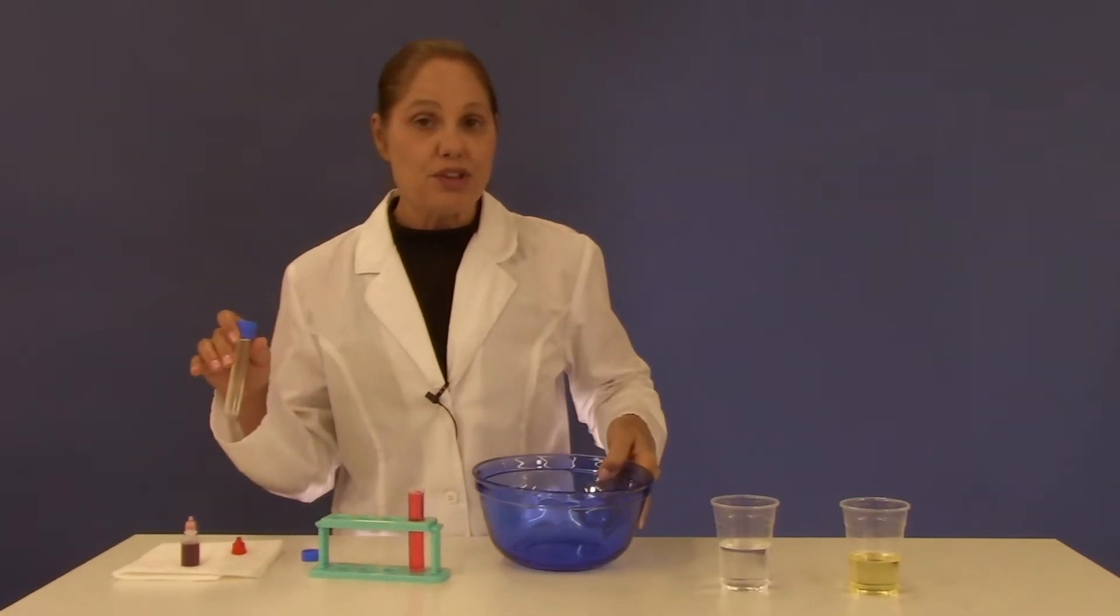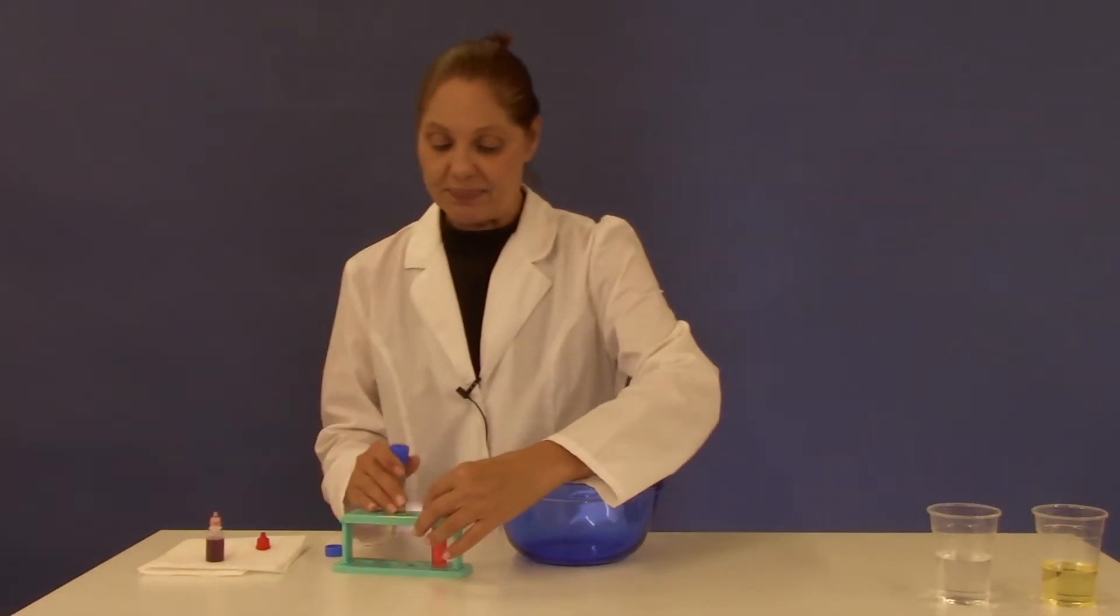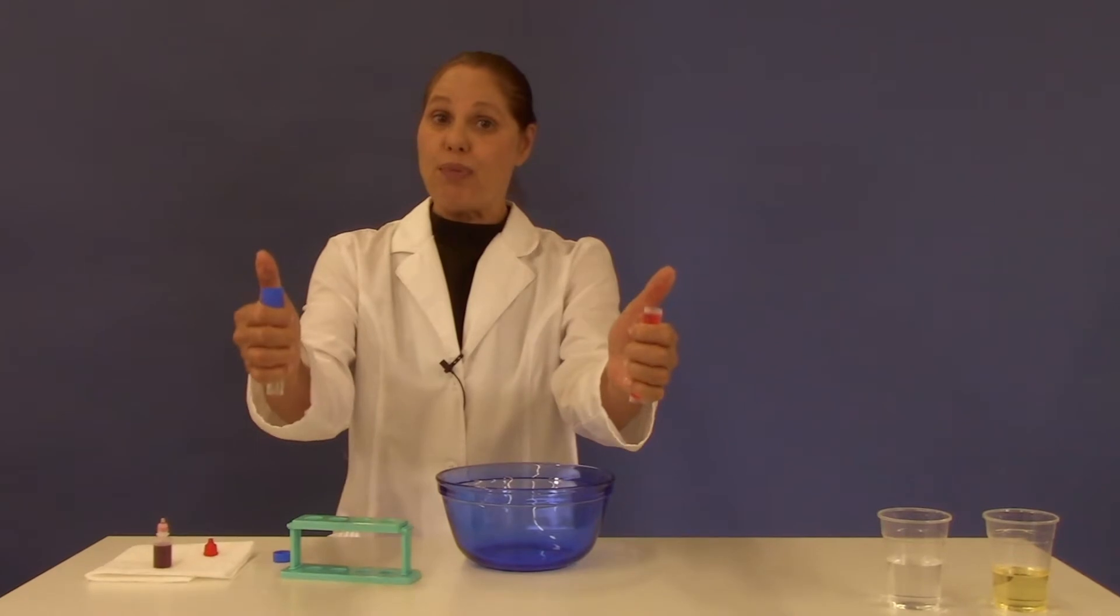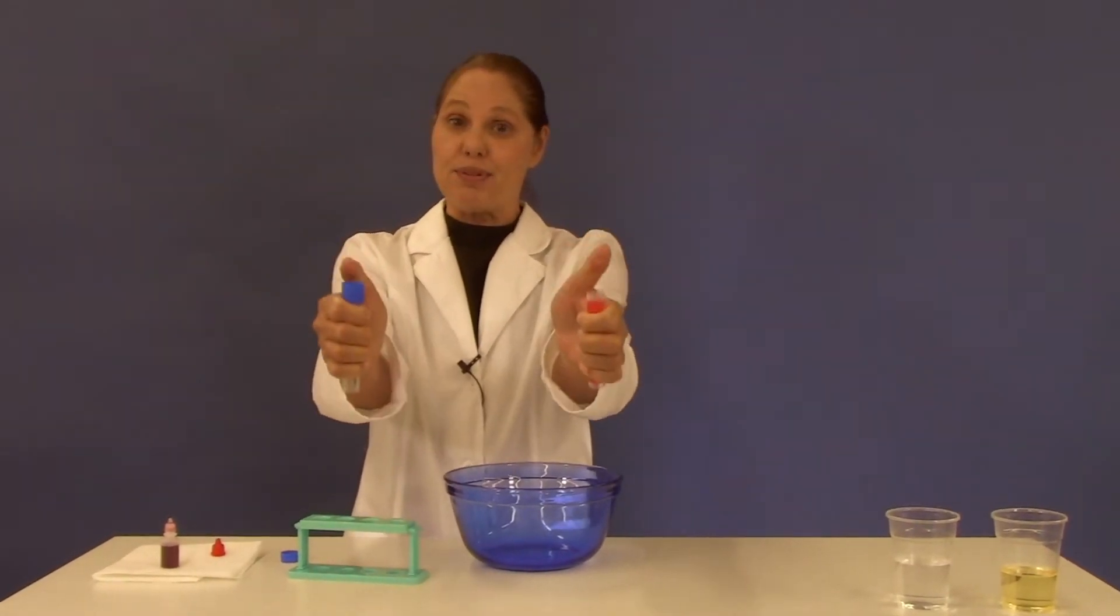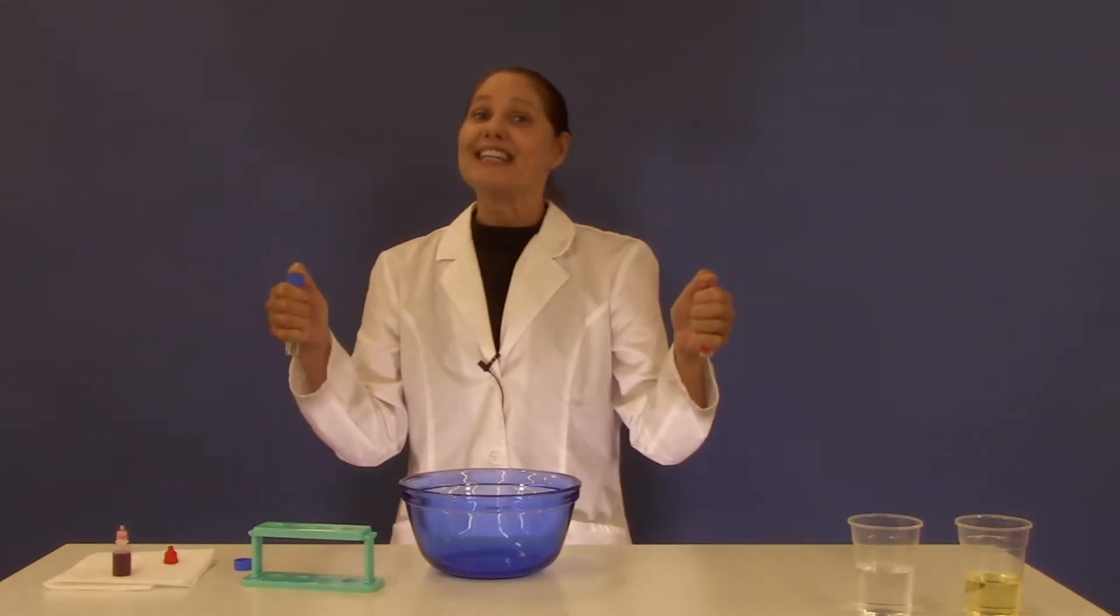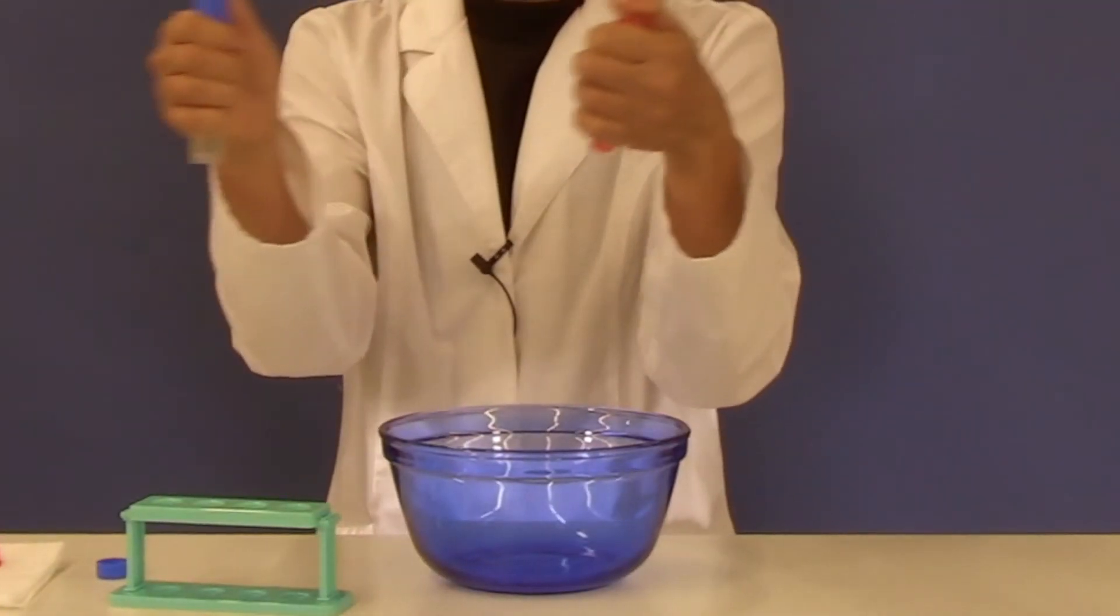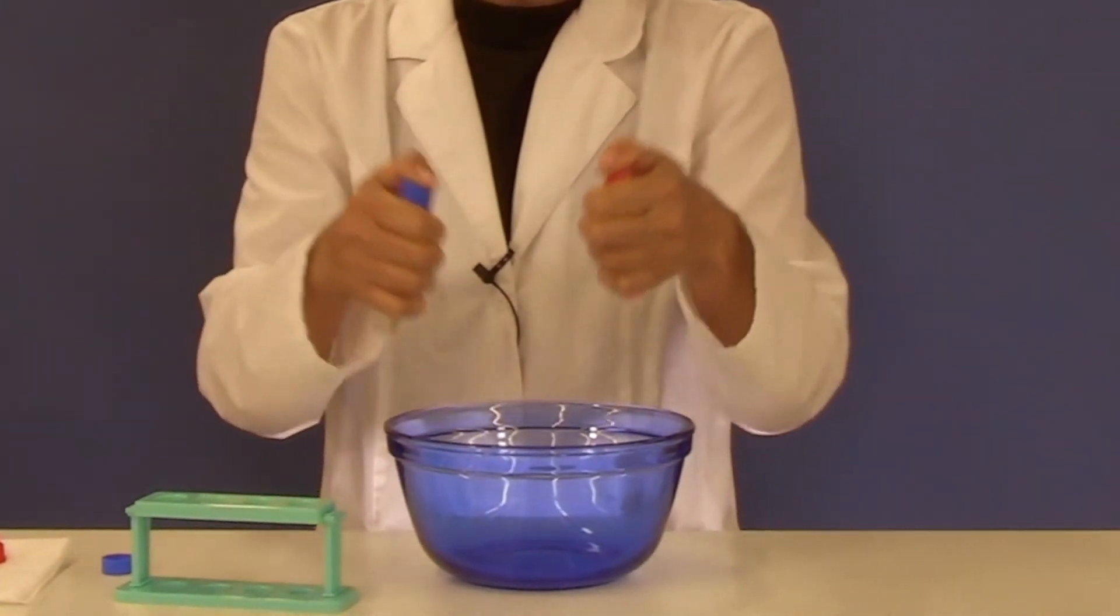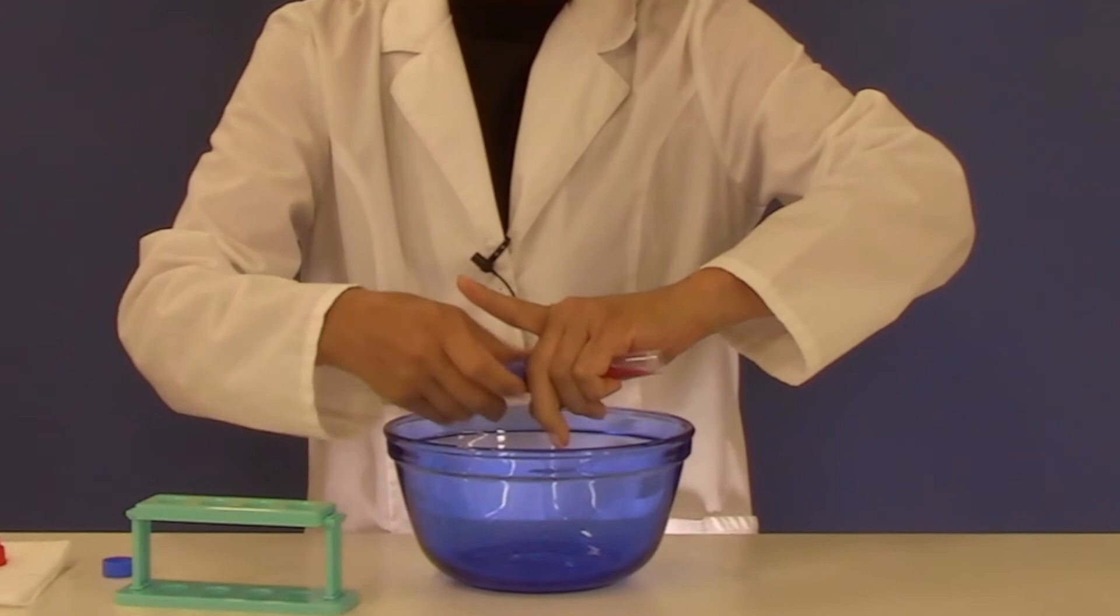Then you want to bring both of your test tubes toward your bucket or bathtub. Make sure that you are holding both of the test tubes in your hand and covering the tops with your thumbs. This next part you have to do very quickly so that ingredients that are inside of the test tubes don't spill out. I want you to very quickly put the two test tubes together like so.